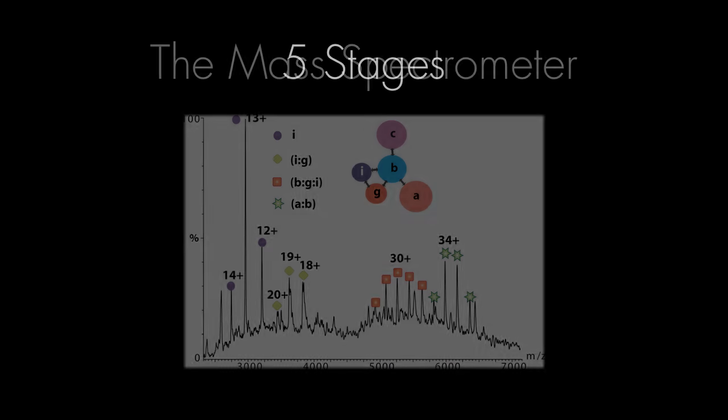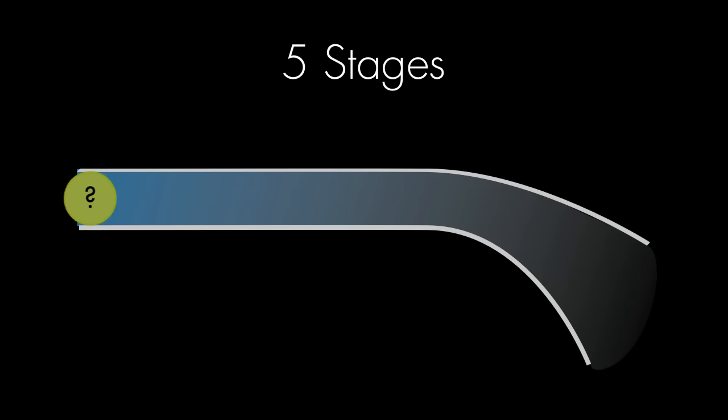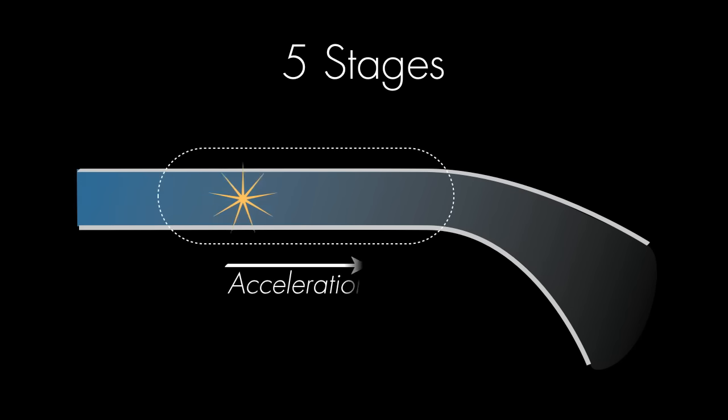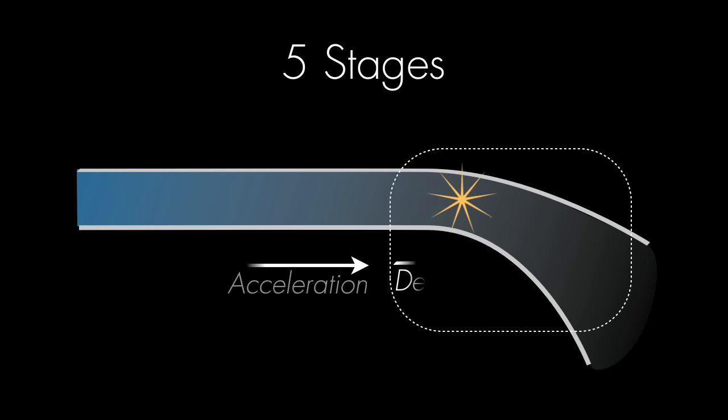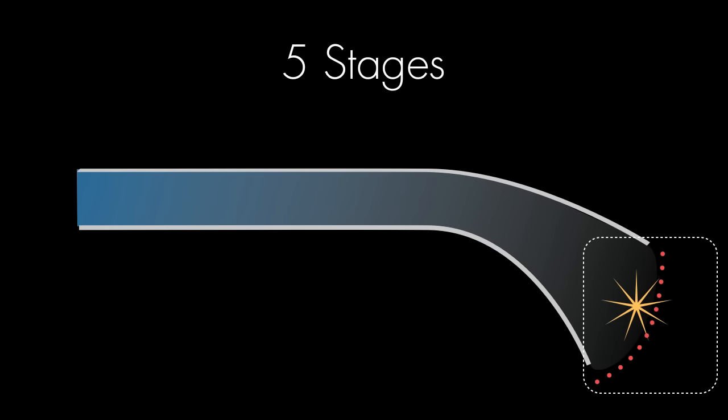A mass spectrometer works in five stages. First, the sample is vaporized. Then, it is ionized. Third, it is accelerated. Fourth, it is deflected. And fifth, it is detected.